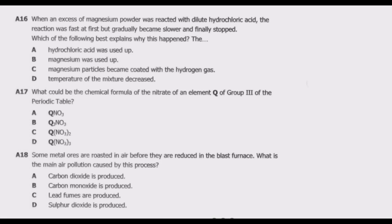When an excess of magnesium powder was reacted with dilute hydrochloric acid, the reaction was fast at first but gradually became slower and finally stopped. Which of the following best explains why this happened? Option A: hydrochloric acid was used up. B: magnesium was used up. C: magnesium particles became coated with hydrogen gas. D: temperature of the mixture decreased. What is key with this question is the phrase 'excess magnesium powder.'